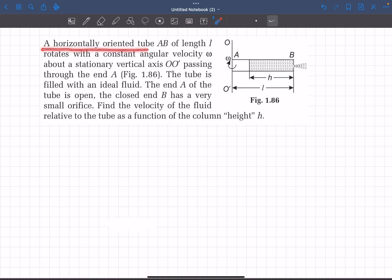We have a horizontally oriented tube AB which is rotating with constant angular velocity omega about a stationary vertical axis O' passing through the end A of the tube. The tube is filled with an ideal fluid. The end A of the tube is open.